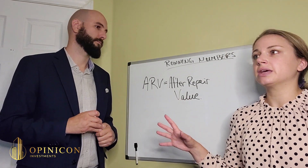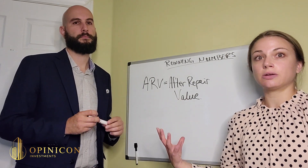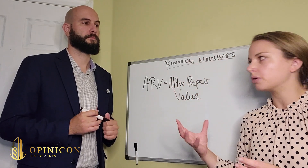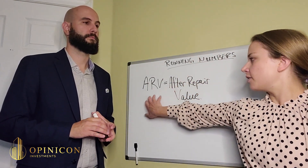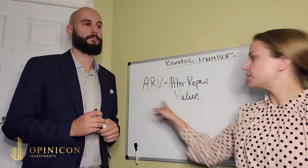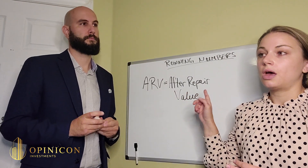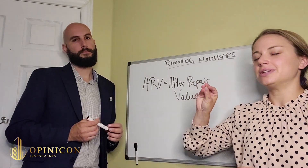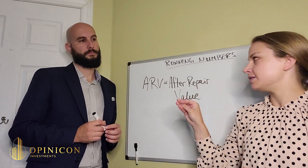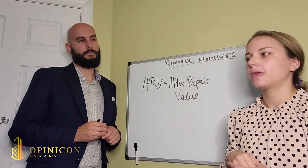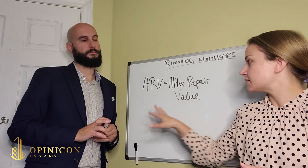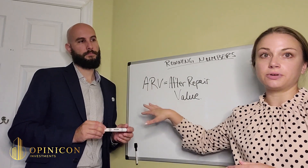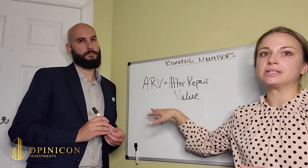We'll go over the basic pieces of running your numbers so you understand what's involved in the formula. Your ARV — After Repair Value — is your absolute most important number. It can be very tricky to find sometimes. Basically, it's what the property is going to be worth after you renovate it — what you're hoping to sell your property at.